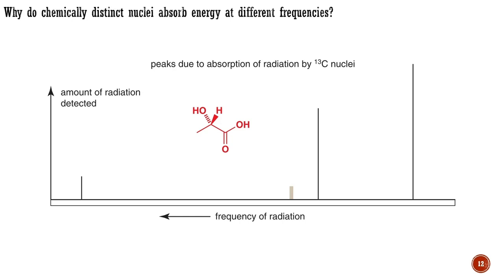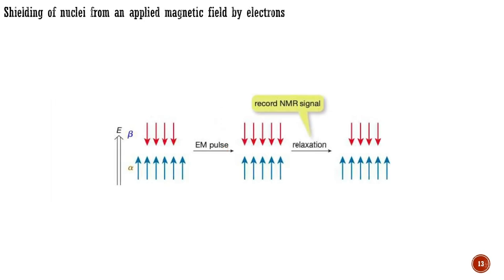But why should carbon atoms be different? The magnetic field strength and what sort of nucleus is being studied affect the energy difference and therefore the frequency. You might expect all carbon nuclei to resonate at one particular frequency, but as you can see on this spectrum, they do not. The variation in frequency for different carbon atoms must mean that the energy jump from nucleus aligned with, to nucleus aligned against the applied magnetic field must be different for each type of carbon atom. The reason is that the carbon-13 nuclei experience a magnetic field that is not quite the same as the magnetic field that we apply.